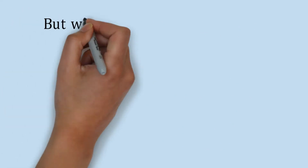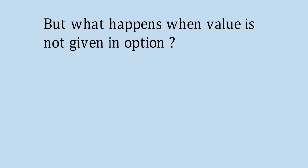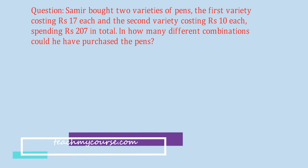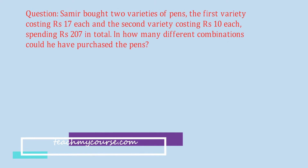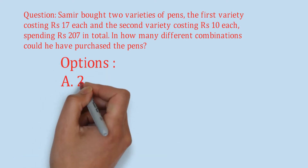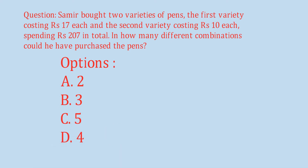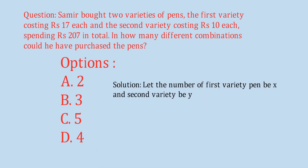But what happens when values are not given as options? The tip is to try out all logical values. For example: Sameer bought two varieties of pens - the first variety costing rupees 17 each and the second variety costing rupees 10 each, spending rupees 207 in total. In how many different combinations could he have purchased the pens? The question asks for the number of combinations, not the exact quantities. Let the number of first variety pens be x and second variety be y. The equation becomes 17x plus 10y equals 207.